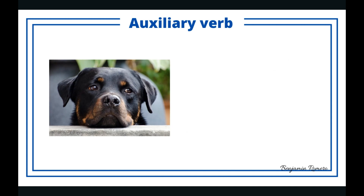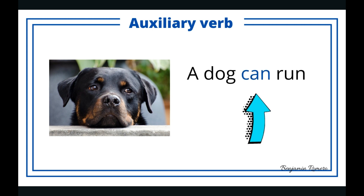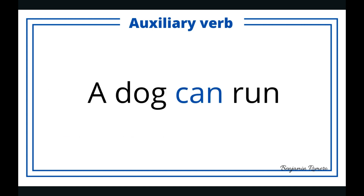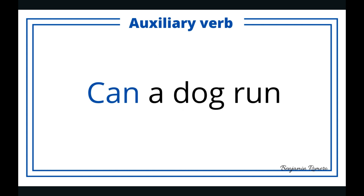So we have a dog here. Remember this dog? A dog can run. That's pretty simple. We have to identify our auxiliary verb, can. Now that we know where that is, let's analyze that in the big picture. So: a dog can run. The only thing we have to do is switch the auxiliary verb with the noun — in this case, the dog. Can a dog run?